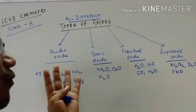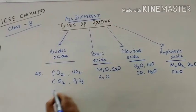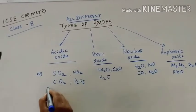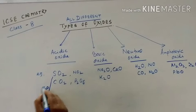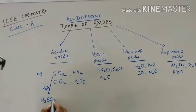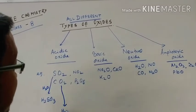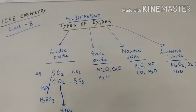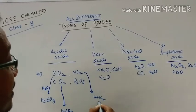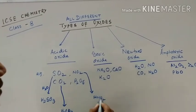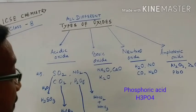Now, why are acidic oxides acidic in nature? Because they produce acids. For example, sulfur dioxide reacts with water to form sulfurous acid. Carbon dioxide reacts with water to produce carbonic acid (H₂CO₃). Nitrogen dioxide reacts with water to produce a mixture of nitric acid and nitrous acid. Phosphorus pentoxide reacts with water to produce phosphoric acid.